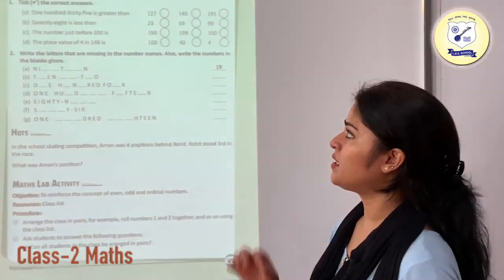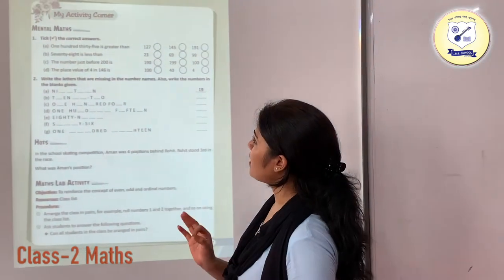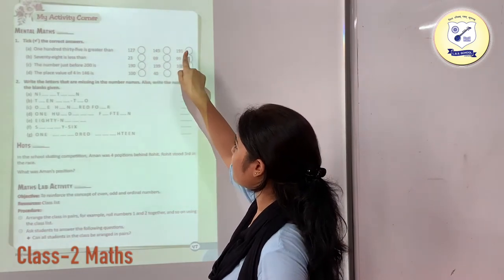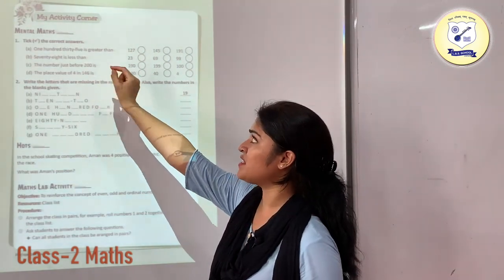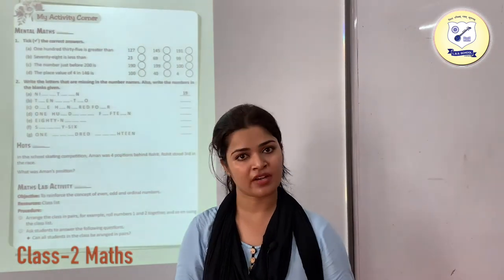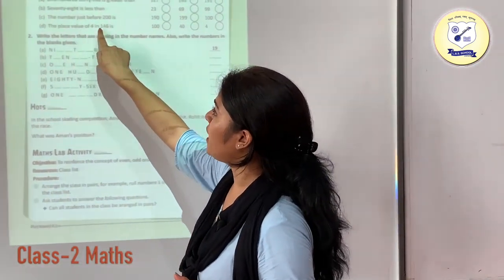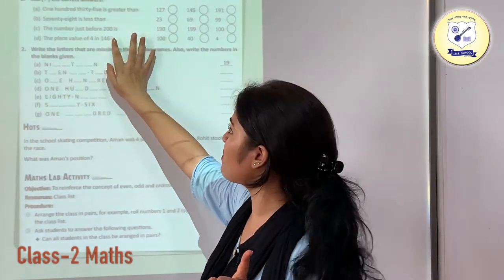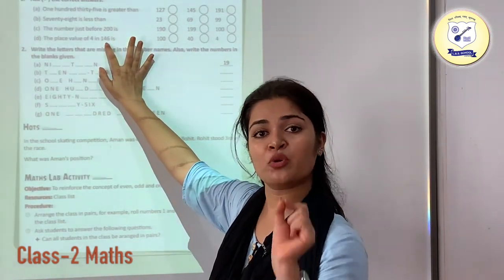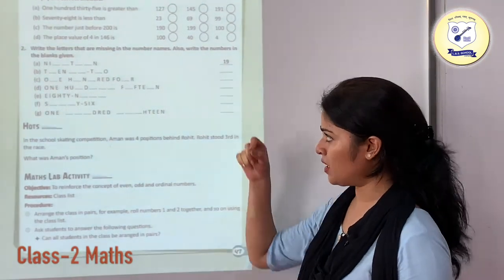Mental maths. Just put the tick at the correct answer. Is 135 greater than 127, 145 or 195? 135 is greater than 127. Since 145 and 195 are already greater than 135, they do not apply. Now the place value of 4 in 146: this is the ones place, this is the tens place, so the place value is going to be 40. You just need to put a correct tick sign in this.